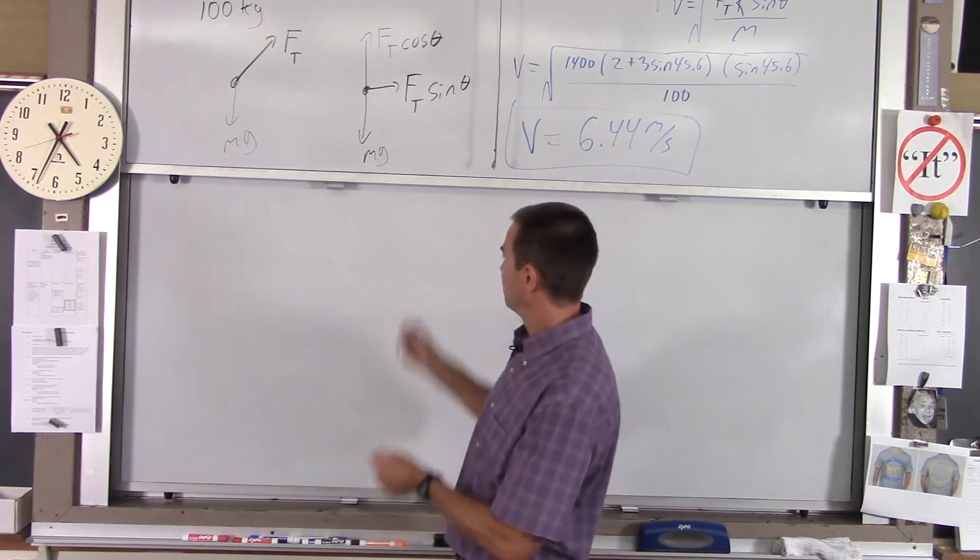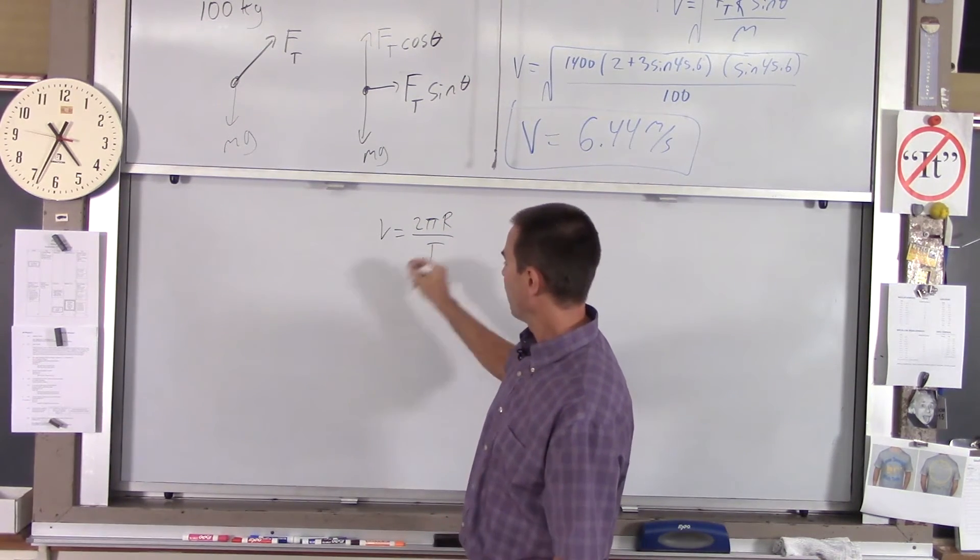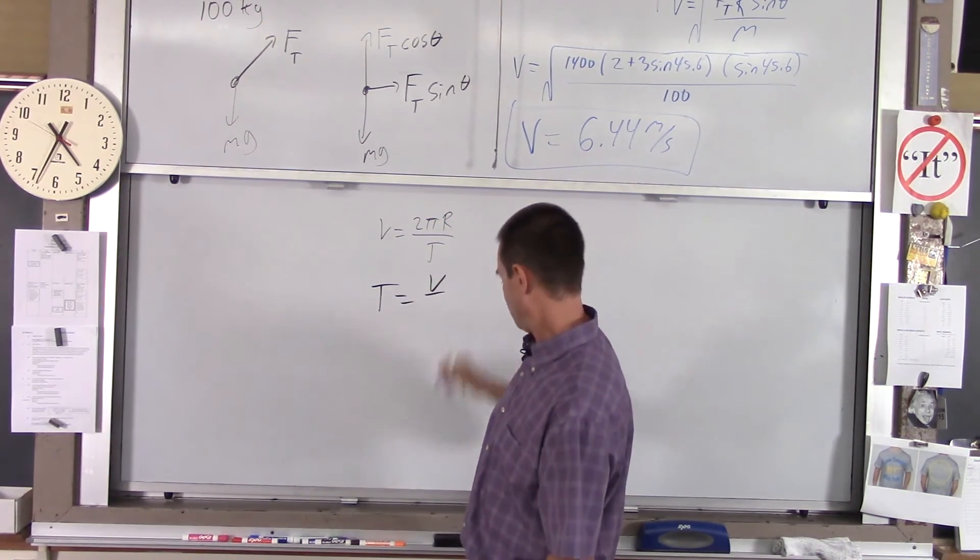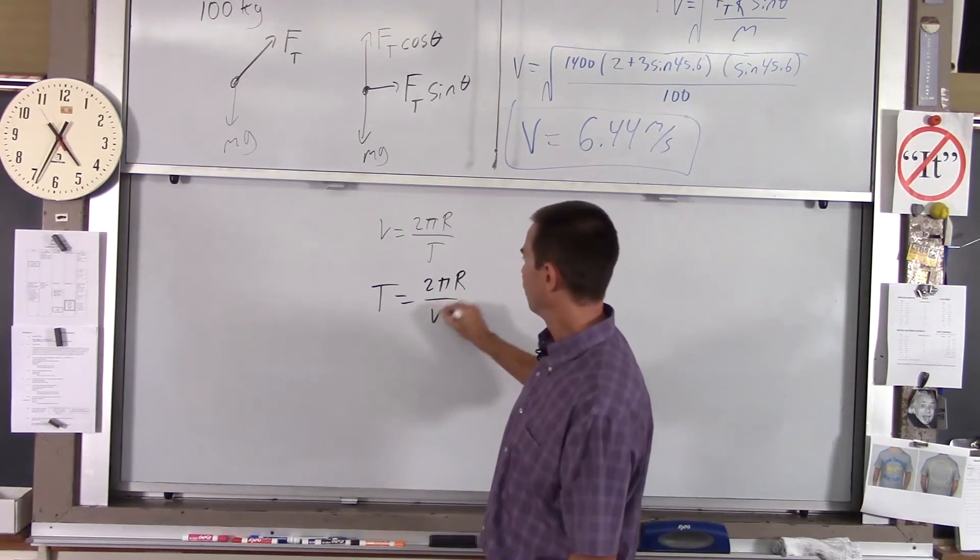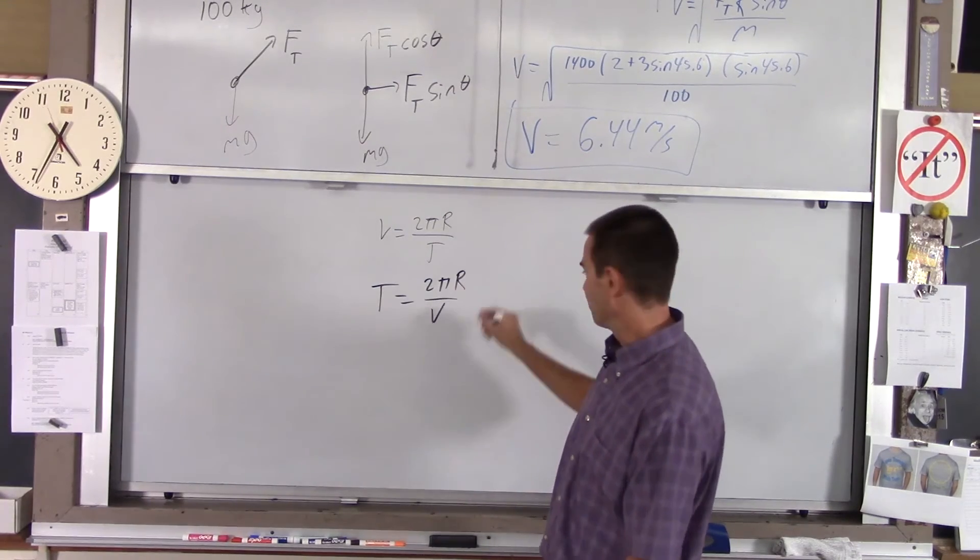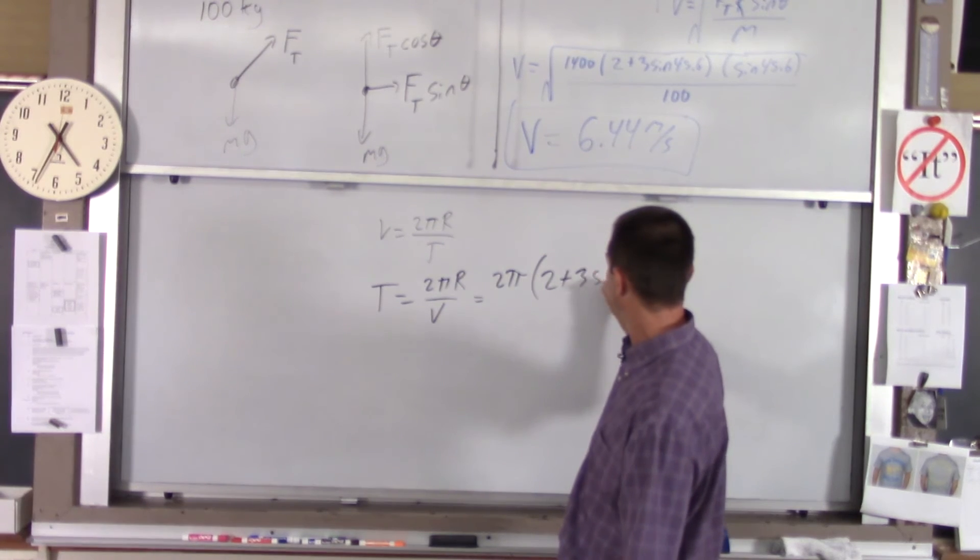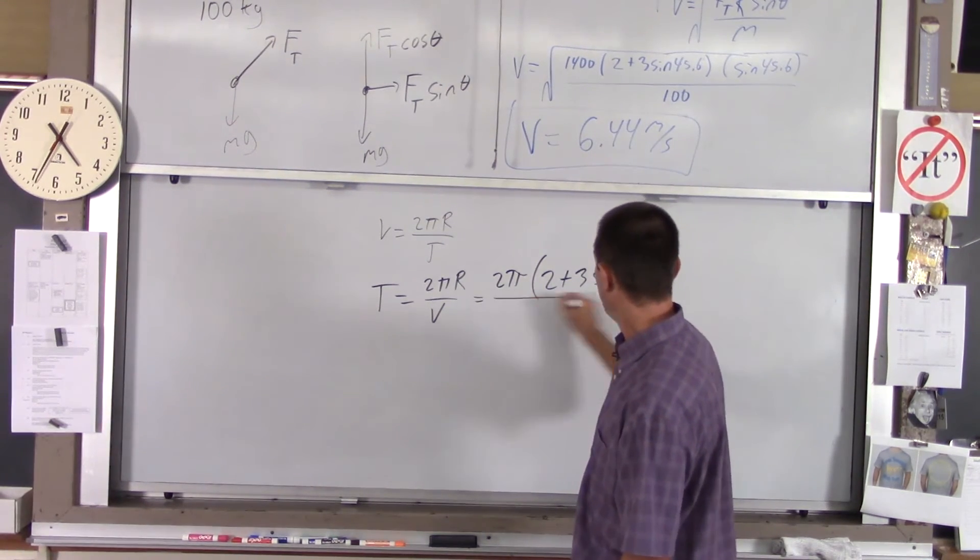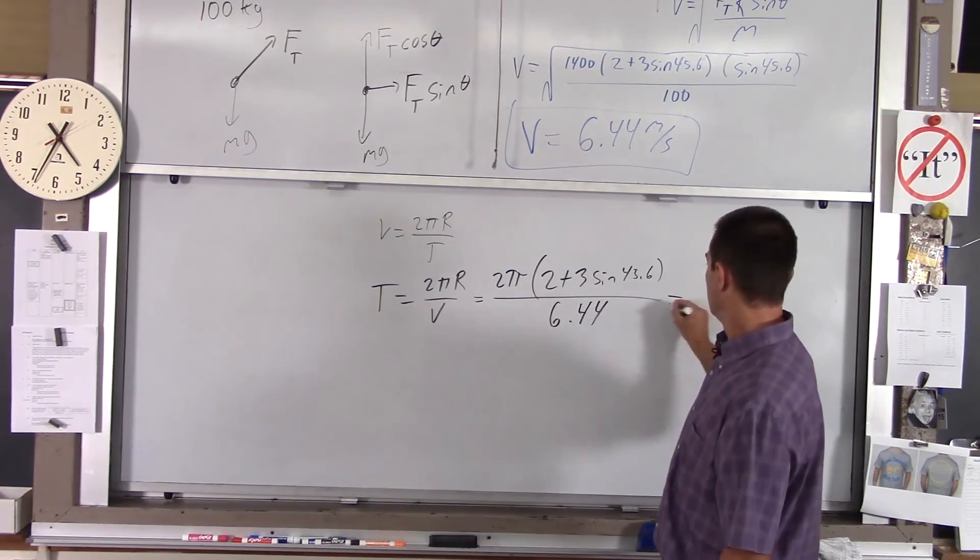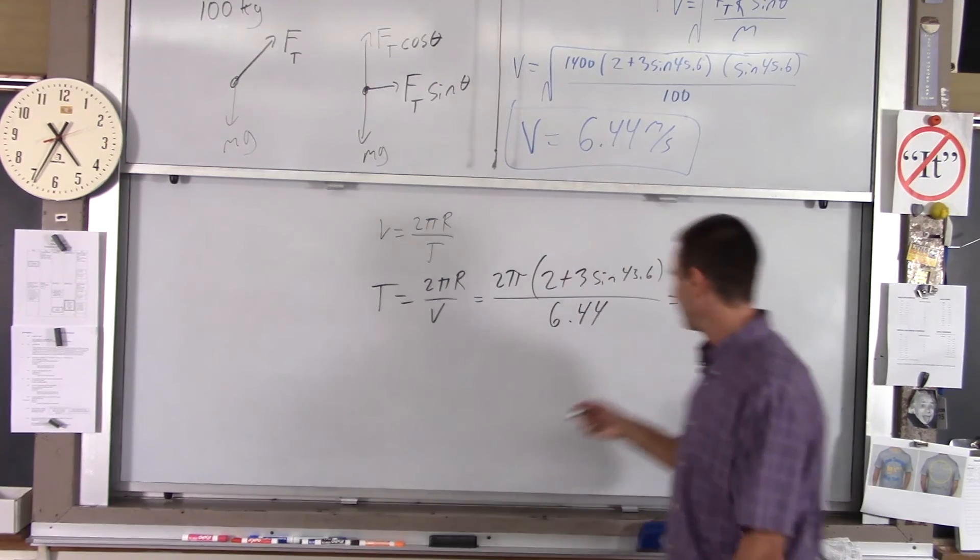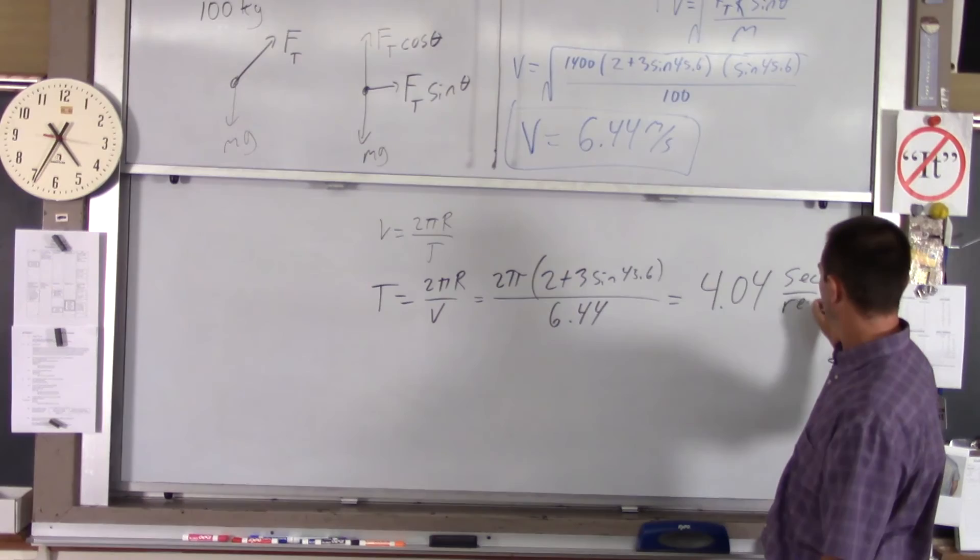We're going to use the equation V equals 2 pi R over T. And I want T. If I do the math, that's 2 pi R over V. And I've got all those numbers. So we got 2 pi times 2 plus 3 sine 45.6 all over V, which I just found to be 6.44. And if you plug your numbers in, you get just over 4 seconds. And that would be seconds per rev.